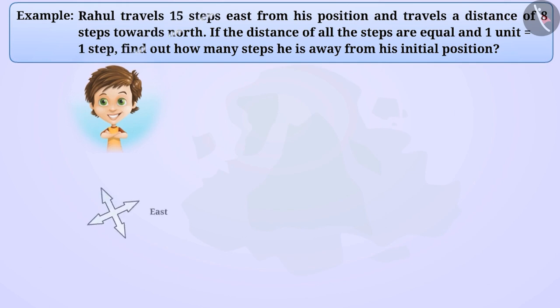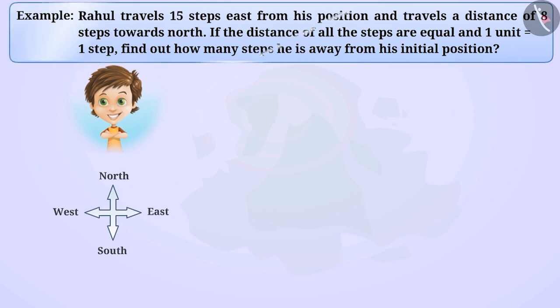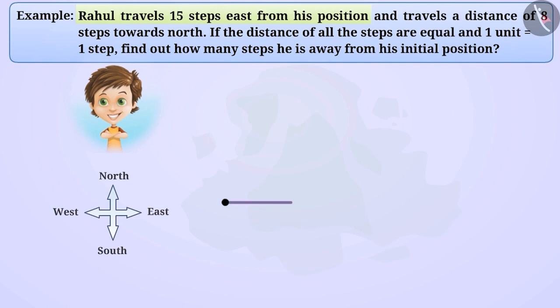We represent the directions in a standard way. On this basis, let us draw a figure for the given situation. Rahul travels a distance of 15 steps from his position towards east. We will show this by drawing a line segment towards the east direction, whose length will be 15 steps. Let's name this line segment AB.